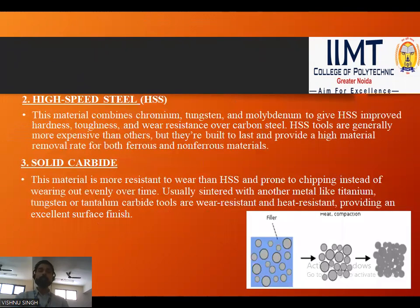Next is high speed steel (HSS). This material combines chromium, tungsten, and molybdenum to give HSS improved hardness, toughness, and wear resistance over carbon steel. HSS tools are generally more expensive than others, but they are built to last and provide a higher material removal rate for both ferrous and non-ferrous materials.